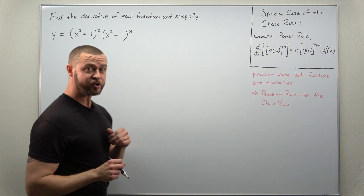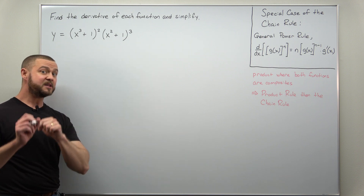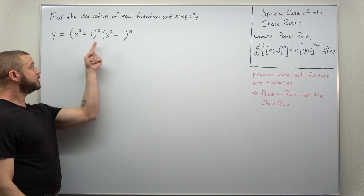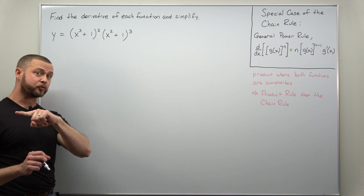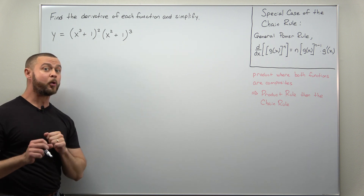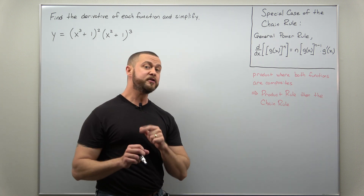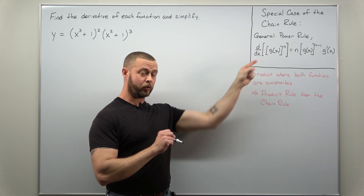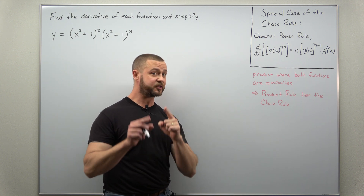If we take a look at our function here, we have a product of two functions where each of them is a composite — a function raised to a power for both factors. We're going to be applying the product rule, and then when we differentiate each of those, that's where we'll apply the chain rule — specifically the general power rule, which is a way to calculate a derivative for a function raised to a power.